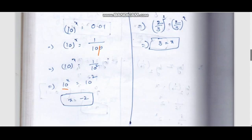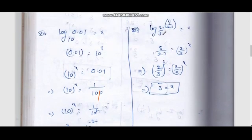Next problem. Log 8 by 27 to the base 2 by 3 equal to x. 8 by 27 equal to 2 by 3 whole power x. 8 by 27 is 2 by 3 whole cube. 2 twos are 4, 4 twos are 8. 3 threes are 9, 9 threes are 27. So 8 by 27 = (2/3)³ = (2/3)^x. Basis are equal, exponents are also equal. Therefore 3 equal to x.